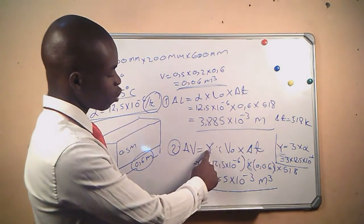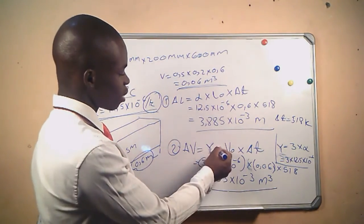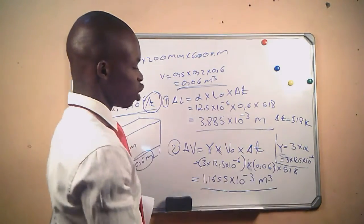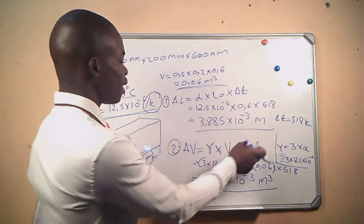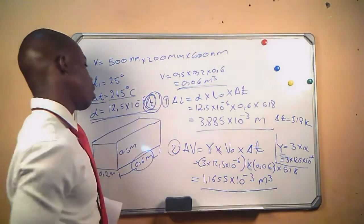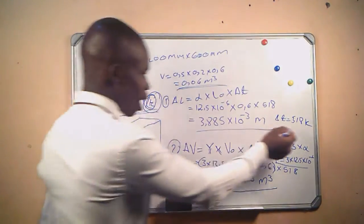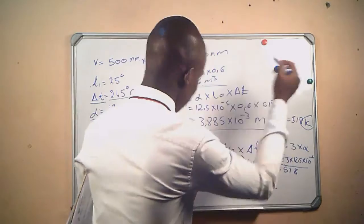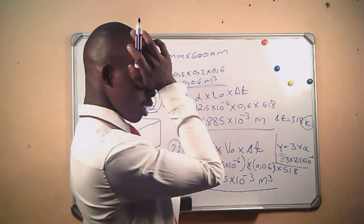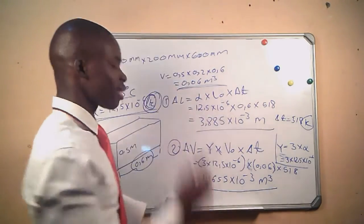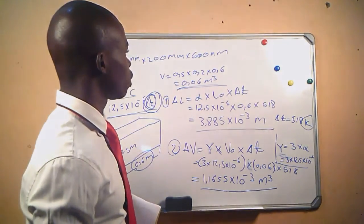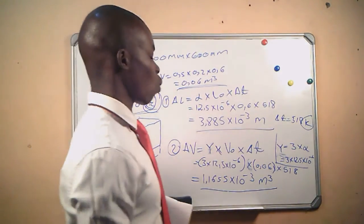Remember to calculate the coefficient of cubic expansion from the linear expansion, get the original volume, and ensure that the SI unit of the linear expansion and the SI unit of the temperature are the same before substituting.